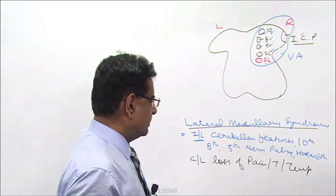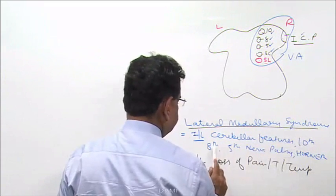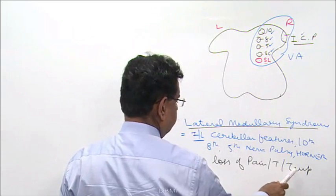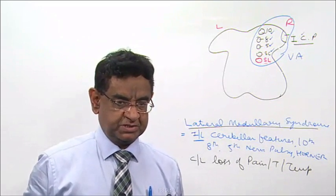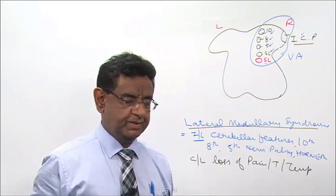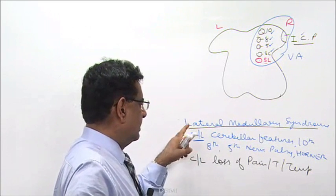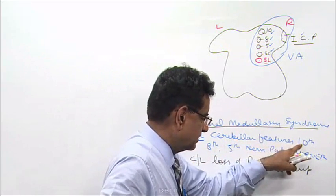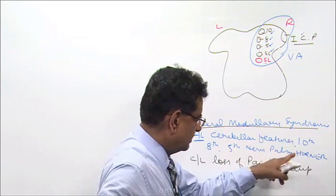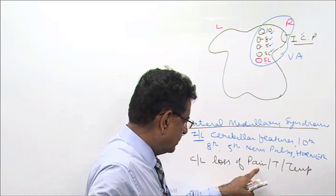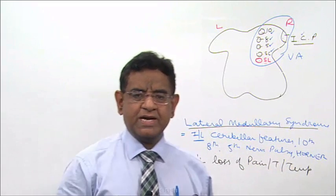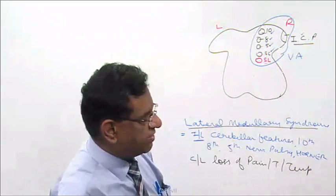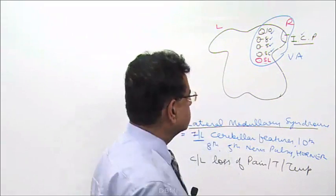Ipsilateral cerebellar features, ipsilateral 10th, 8th, and 5th nerve palsy, and Horner syndrome — but contralateral loss of pain, touch, and temperature. This is lateral medullary syndrome. Revise: lateral medullary syndrome — ipsilateral features, contralateral loss of pain, touch, and temperature.